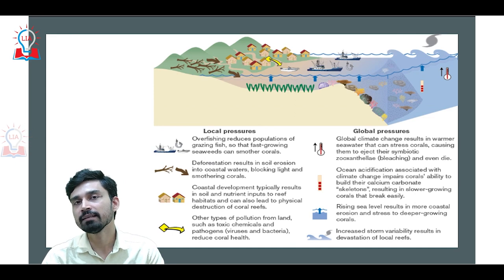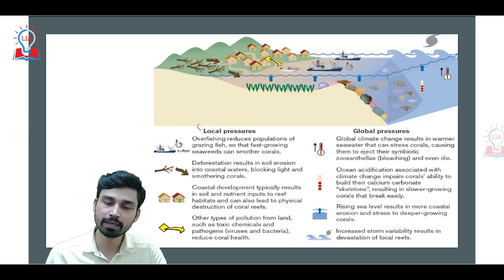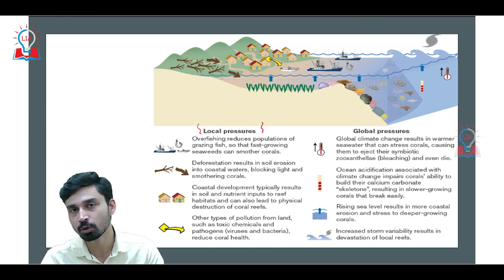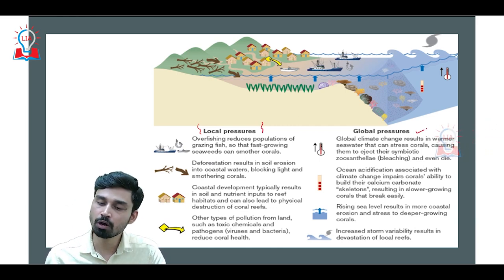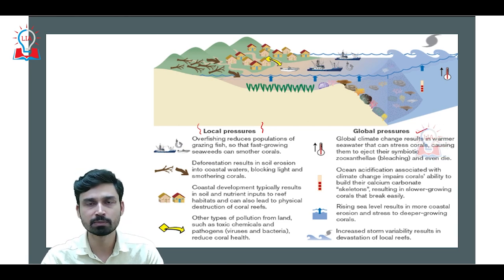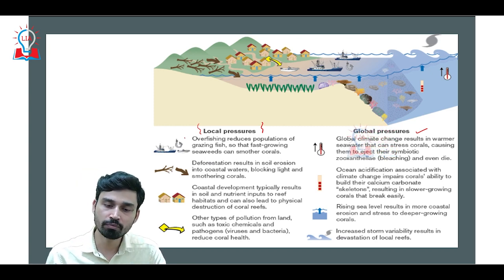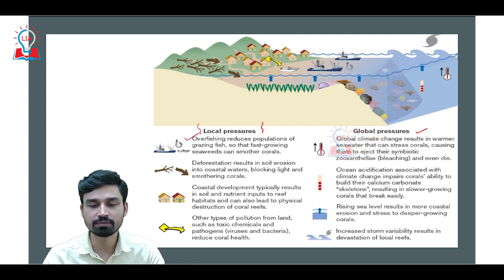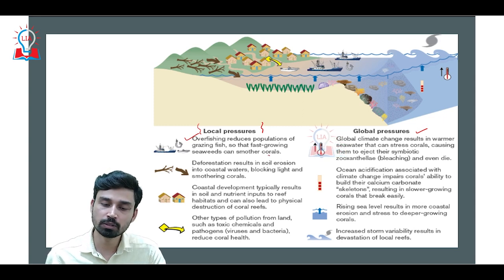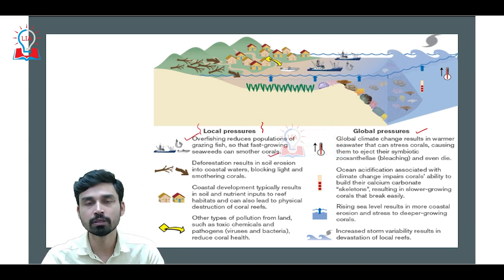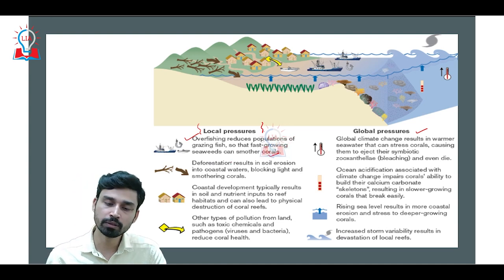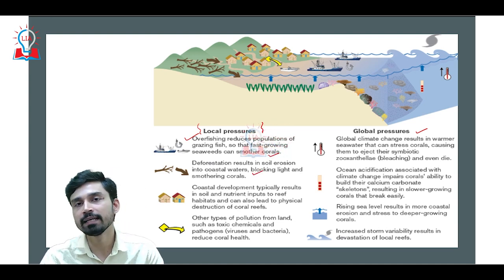The reasons behind the destruction and damage to coral reefs can be divided into two categories: localized pressures and globalized pressures. Local pressures relate to activities performed by coastal communities. Overfishing reduces the population of grazing fish, which can smother the corals. Deforestation results in soil erosion, and the soil sediments enter coastal waters, blocking light and choking the corals, causing their death and destruction.